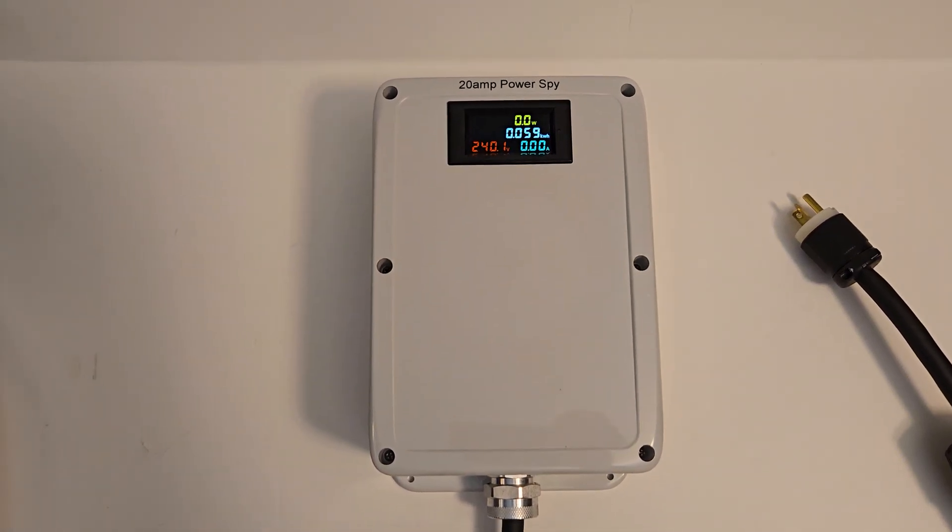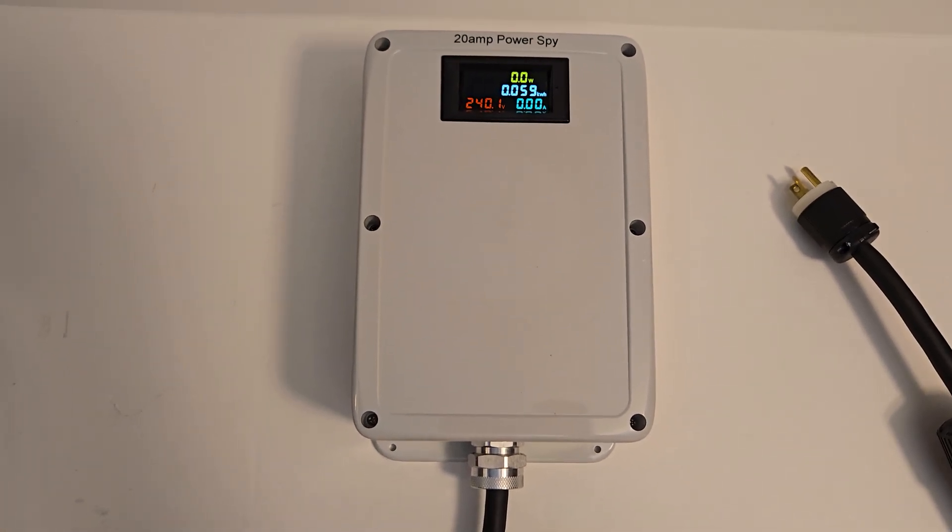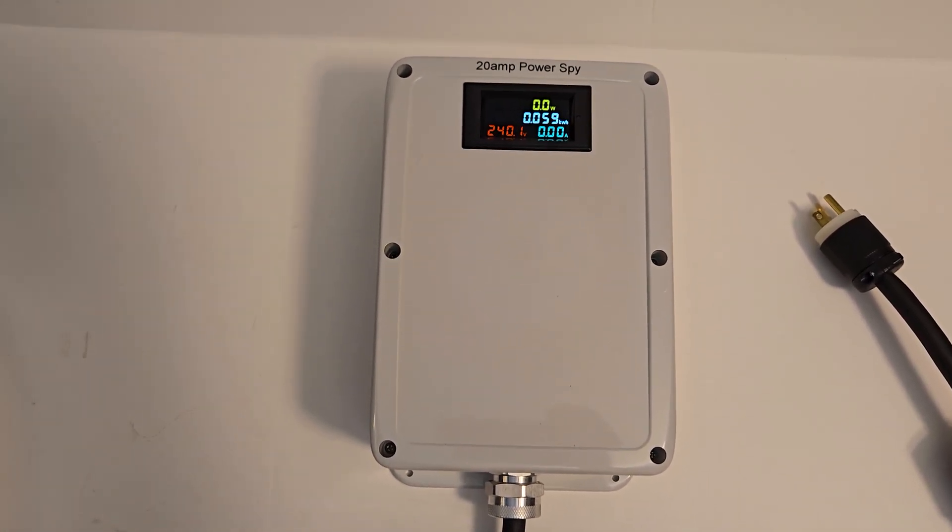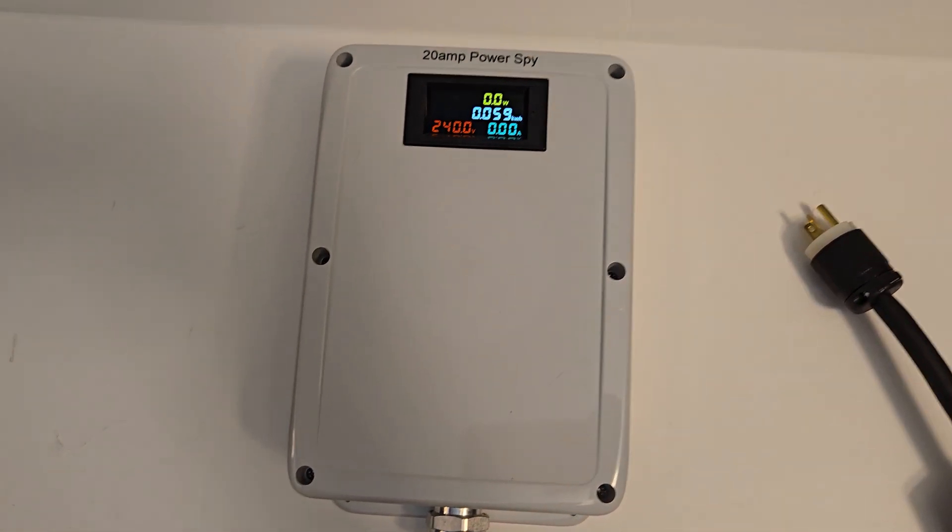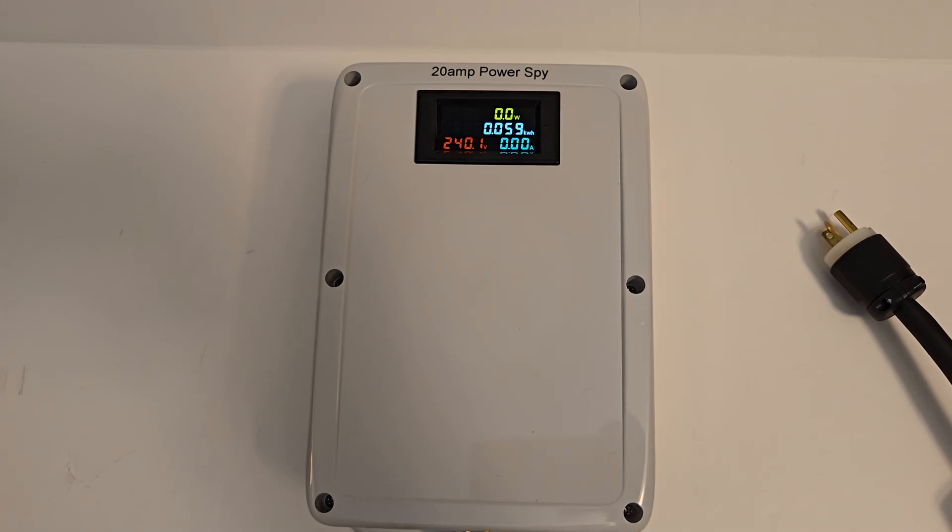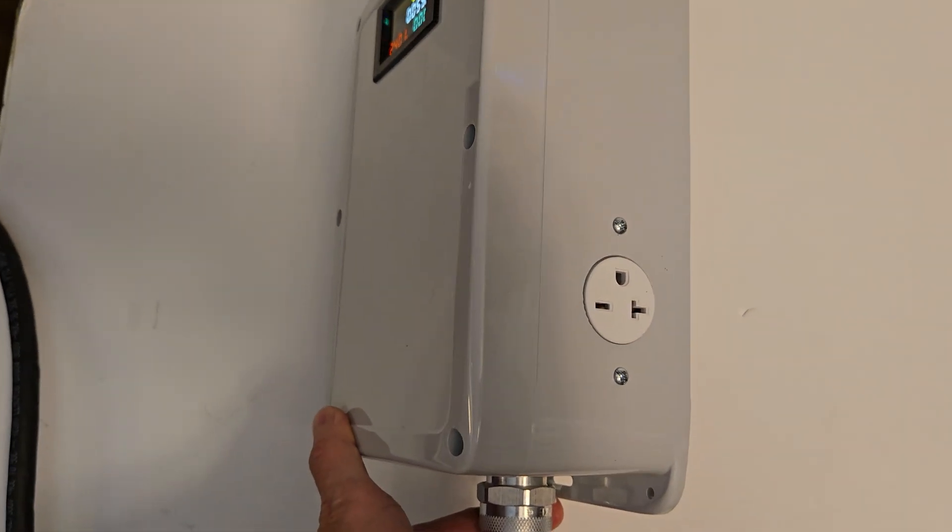Today we're having a look at the BSA Electronics 20 amp PowerSpy. This is available in 30 amp versions, 50 amp versions, with a number of different connectors. But this one is the PowerSpy number 15. In this configuration you get a NEMA 620 plug and a single NEMA 620 outlet.